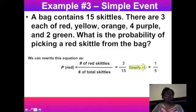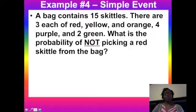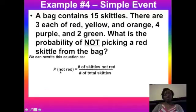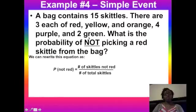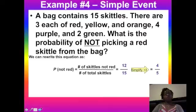In example four, you were supposed to find the probability of not picking a red Skittle. We need the number of Skittles that are not red out of the total. There are three red, so the yellow, orange, purple, and green together give 12 non-red Skittles out of 15, which simplifies to 4/5.